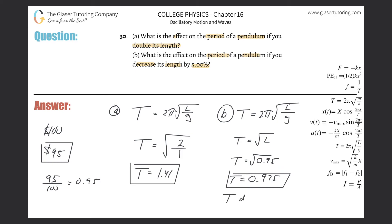The period will decrease by one minus 0.975, which equals 0.025. Converting to percent, that's a decrease of 2.5% of its original value. So decreasing the pendulum length by 5% results in the period decreasing by approximately 2.5%.